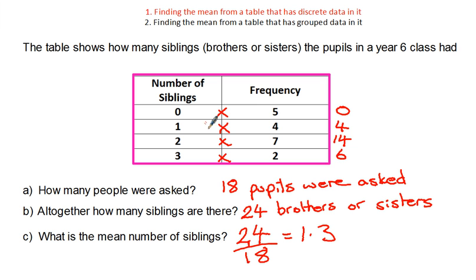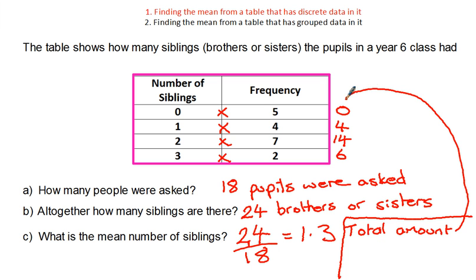This method will always work when you've got a table and you've got discrete data. That means where it's not grouped. What it means by being discrete is that you can only have zero siblings, one sibling, two siblings, three siblings. You can't have, for example, one and a half brothers or two and a half sisters. That's what it means by being discrete. So whenever you have this type of data, you can literally just multiply along each row, that gives you the total, and you divide the total by the total frequency. So if you want to remember a rules-based approach, it's the total amount, so that's from this new column that you made yourself, divided by the total frequency.